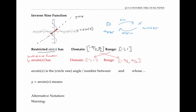For example, since sine of pi over two is one, arc sine of one is pi over two. And in general, the output of arc sine of x is the angle between negative pi over two and pi over two whose sine is x.